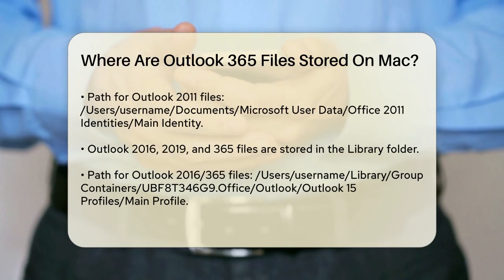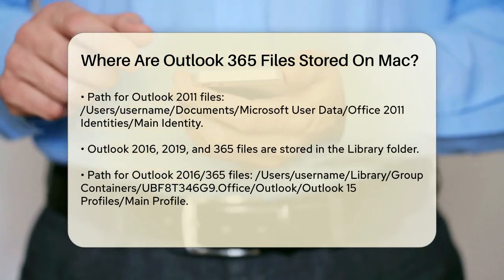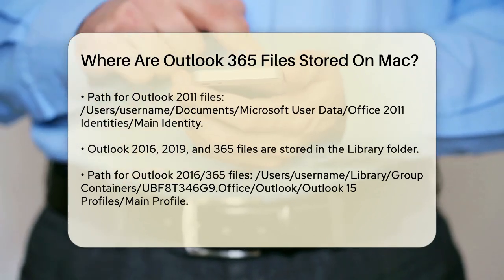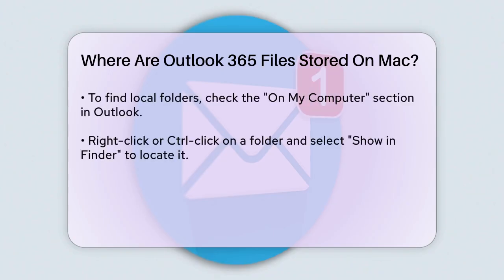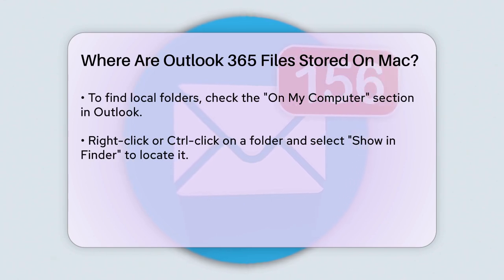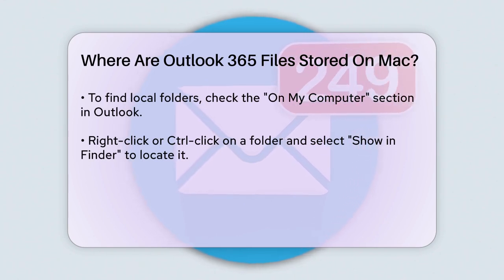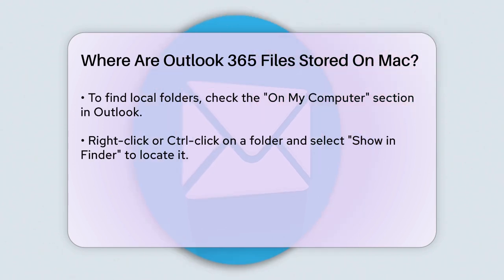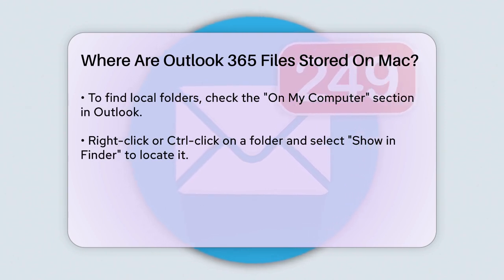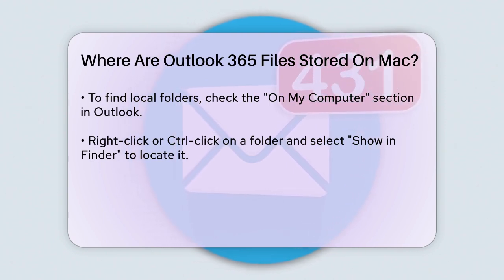To find locally hosted folders — the folders you see under On My Computer in Outlook — you can use a simple method. Open Outlook on your Mac, go to the left sidebar, and find the On My Computer section. Right-click or Control-click on the folder you want to locate and select Show in Finder from the contextual menu. This will open a Finder window showing the exact location of that folder within the Outlook database.